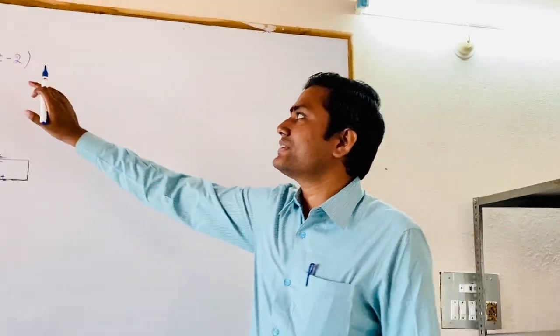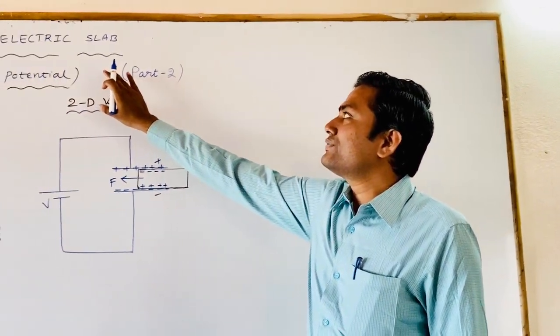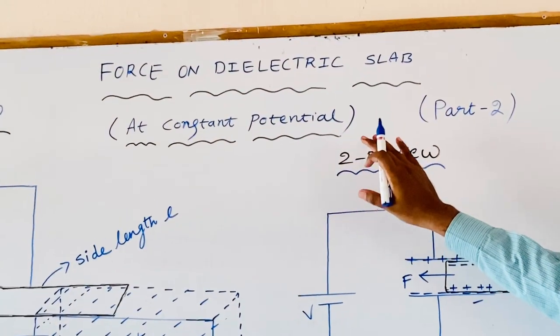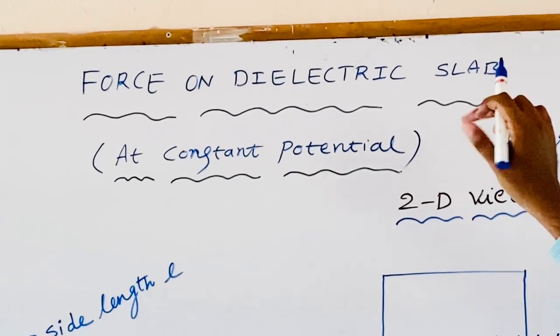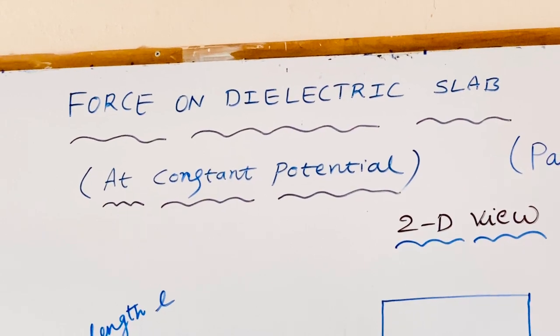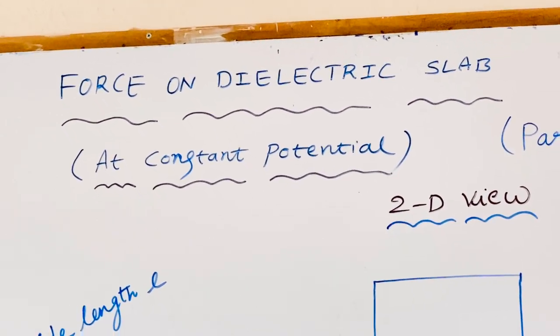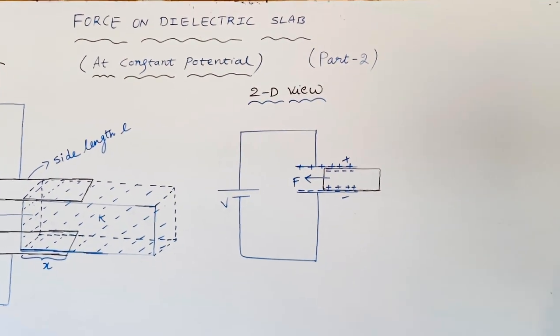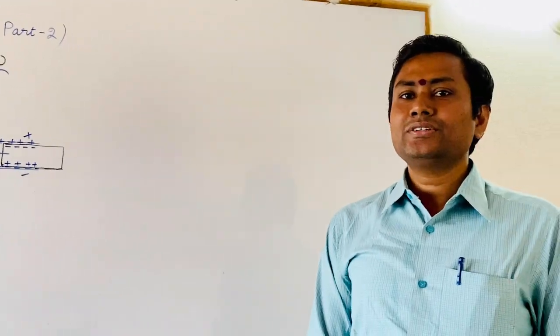Dear students, I am Shiva, faculty of physics. In the last session, we discussed this concept for 9th standard: force on a dynamic slab between the plates of a capacitor when the capacitor plates are maintained at constant potential. At that time, we discussed one point — what is the nature of that force, that is, variable or constant, and whether that force is responsible for some oscillatory motion, that is, simple harmonic or not.